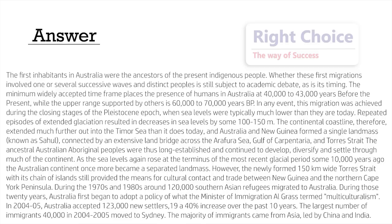The ancestral Australian Aboriginal peoples were thus long established and continued to develop, diversify and settle through much of the continent. As sea levels again rose at the terminus of the most recent glacial period some 10,000 years ago, the Australian continent once more became a separated landmass. However, the newly formed 150-kilometer-wide Torres Strait with its chain of islands still provided the means for cultural contact and trade between New Guinea and the northern Cape York Peninsula.